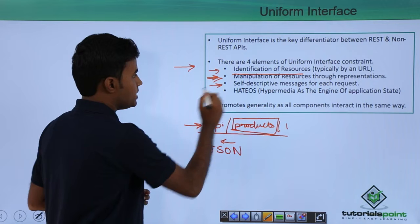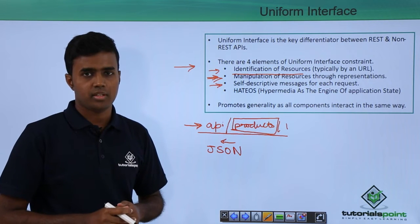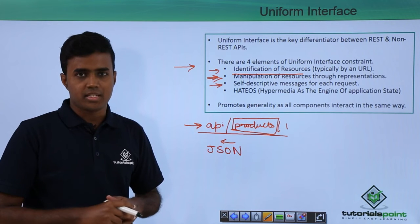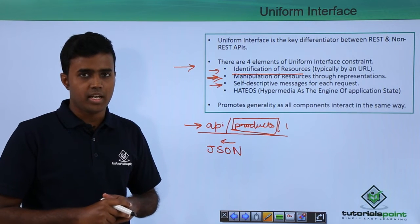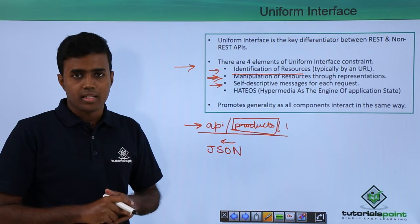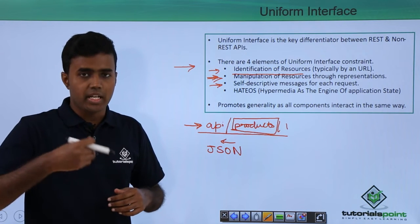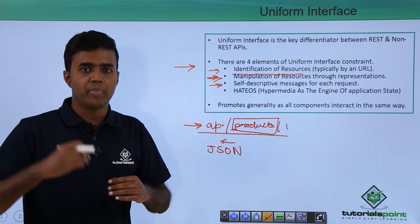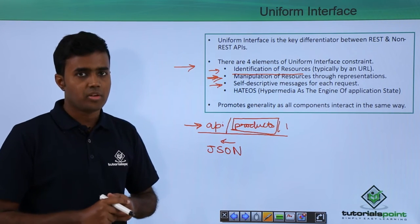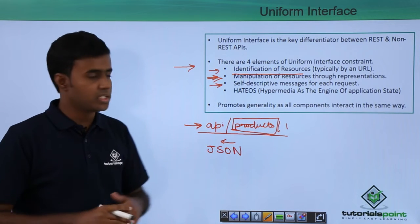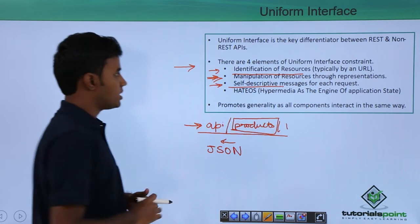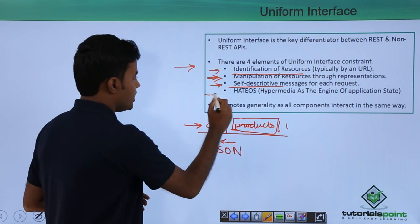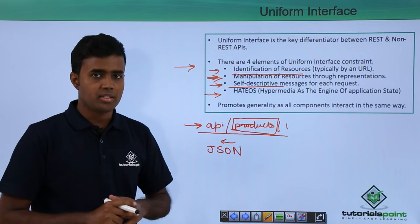The third element is self-descriptive messages for each request. As we already saw, the statelessness constraint states that the server cannot hold any state, which means that when a client sends a request, it needs to include all the details so that the server can completely understand the nature of the request. For this, the messages or requests need to be self-descriptive.